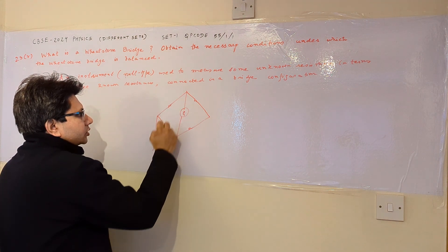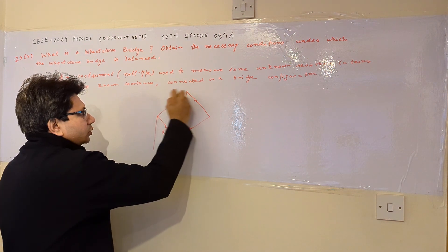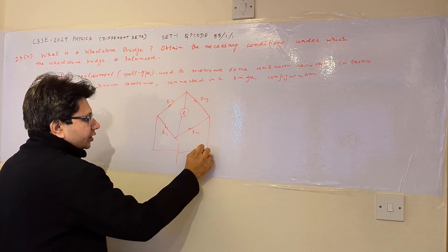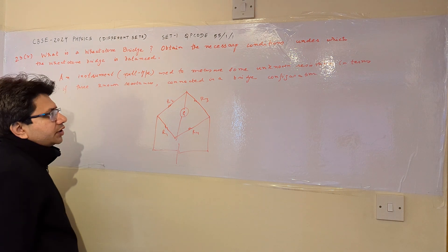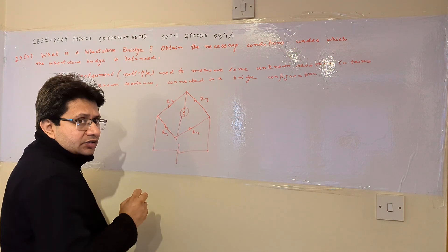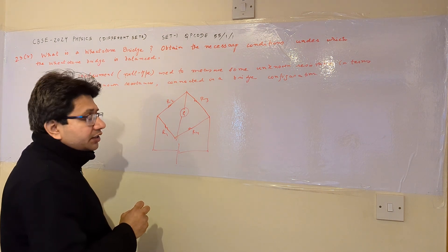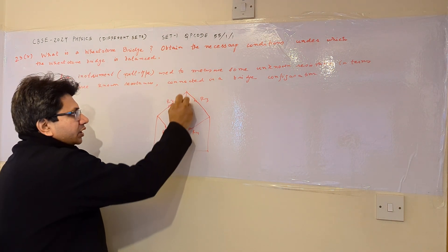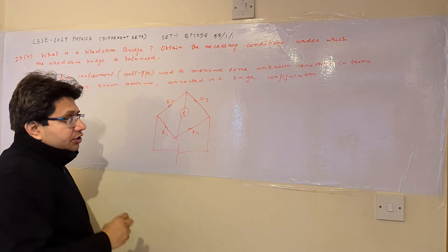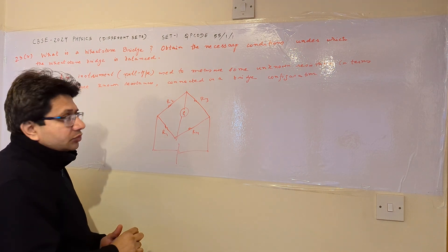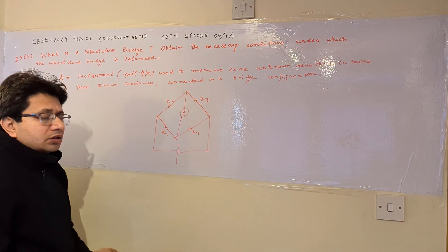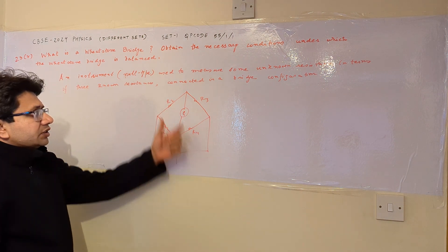So let us call them as R1, R2, R3, R4. This is the battery to energize this circuit. And this is the galvanometer used to sense the null condition. Null condition means no current passing through this galvanometer. Under that condition the bridge is said to be balanced. And we have to find out that condition in terms of the relation between these resistances.